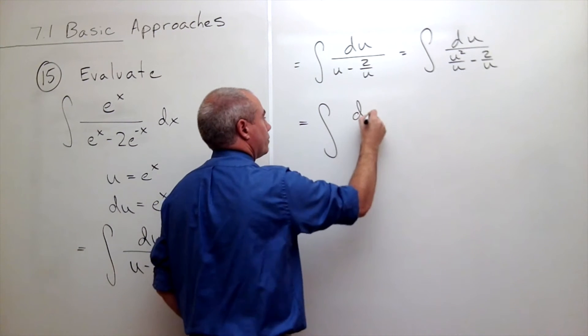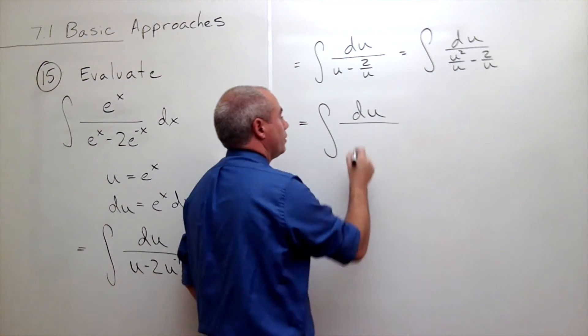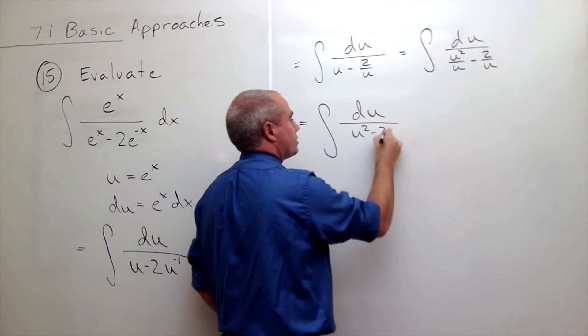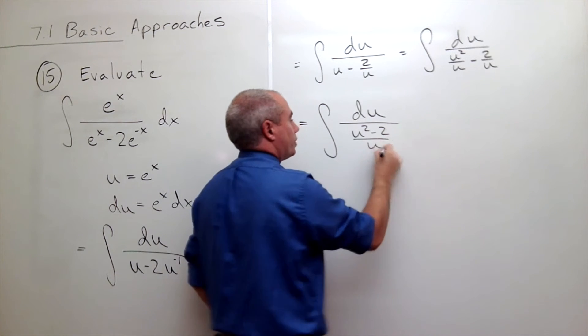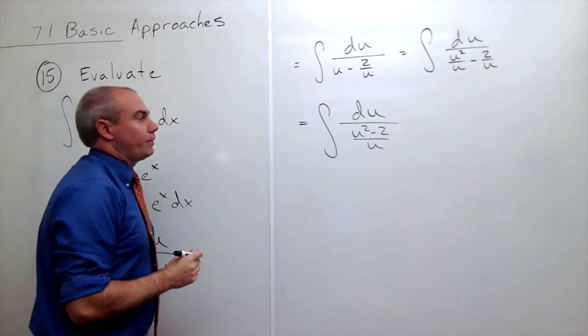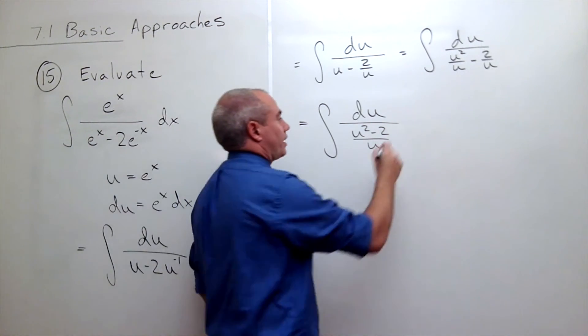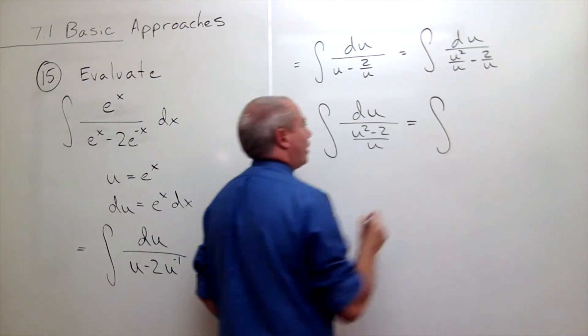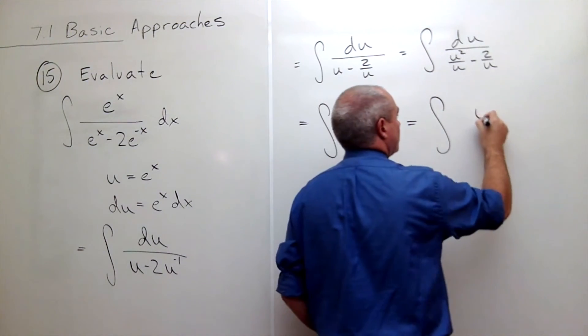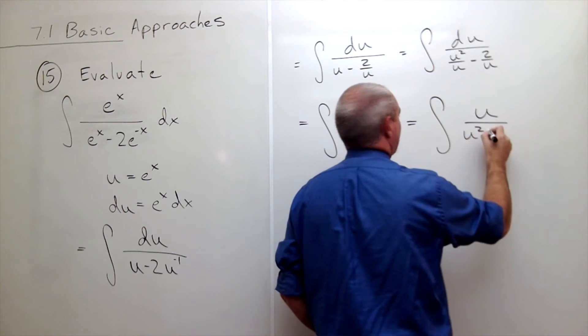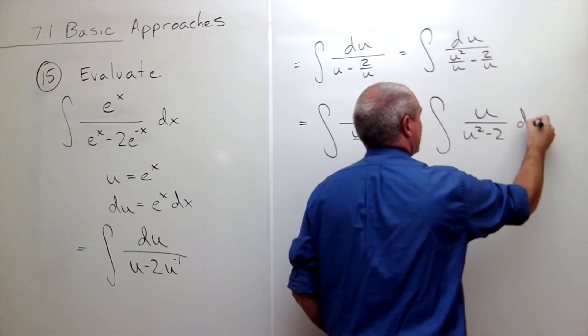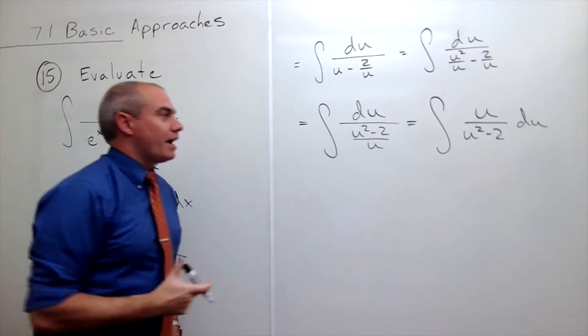Now I can rewrite again, this is the integral of du over u squared minus 2 over u. Now we can flip and multiply this thing and we get the integral of u over u squared minus 2 du.